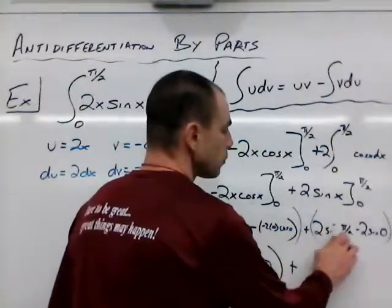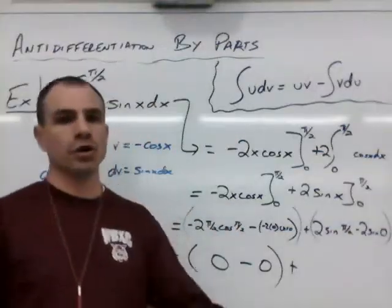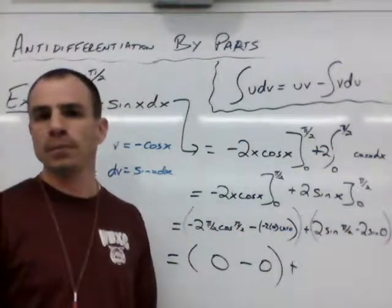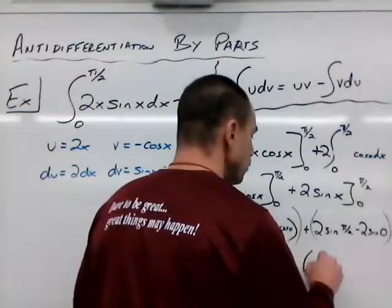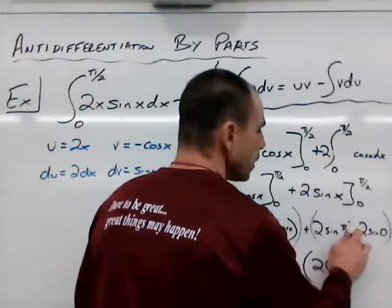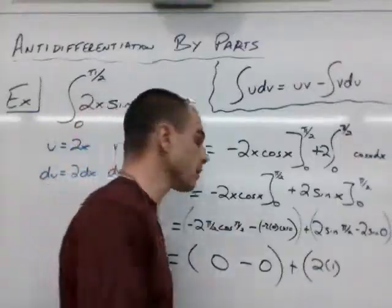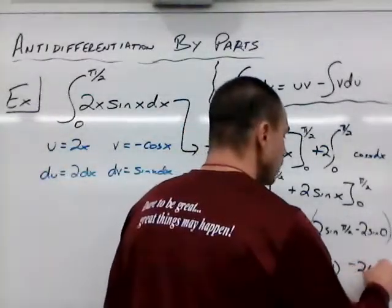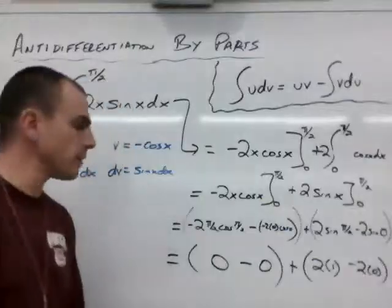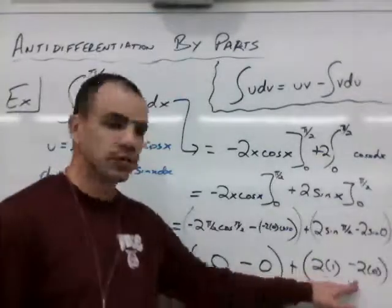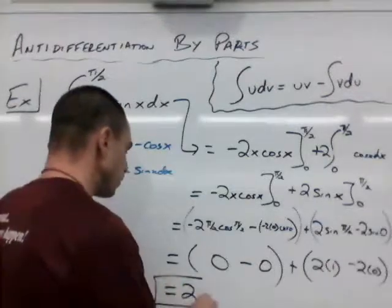Plus, then we have twice the sine of pi over 2. More trig common values, sine of pi over 2, that's going to be 1. So we have 2 times 1 minus twice the sine of 0. Sine of 0, that would be 0. So 2 times 0. Okay, so if we put all this together, we have 0 plus 2, so our final answer is 2.